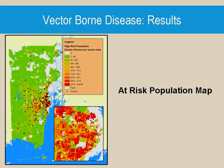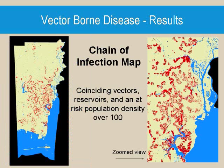This slide shows the final vulnerable population map. Most of the vulnerable population is concentrated in the city of Mobile and its surrounding suburbs. By intersecting the bird and mosquito habitat maps and the population density map, the total risk map was created. This map is based on an at-risk population density of 100 persons per square mile.